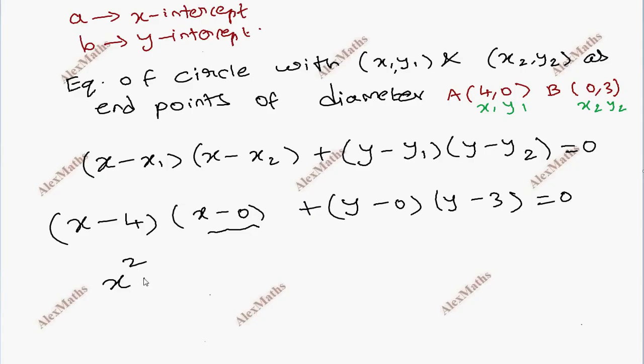So, x1 times of x2, this is x2, x2 minus 4x, this is x2 plus y square minus 3y equal to 0. x square plus y square minus 4x minus 3y equal to 0.